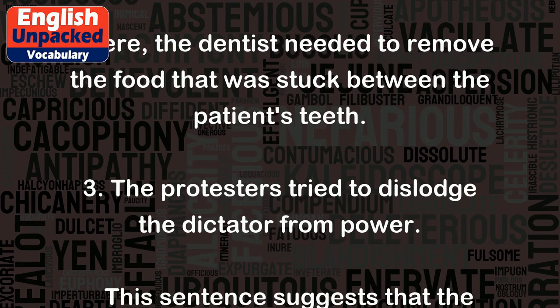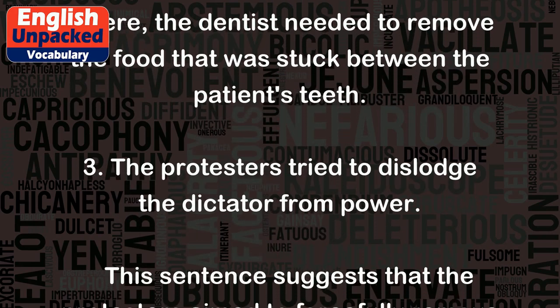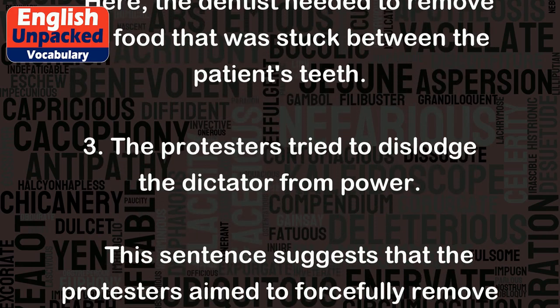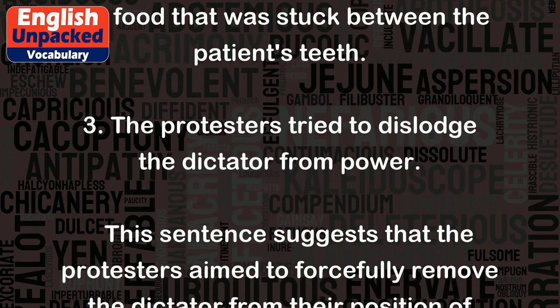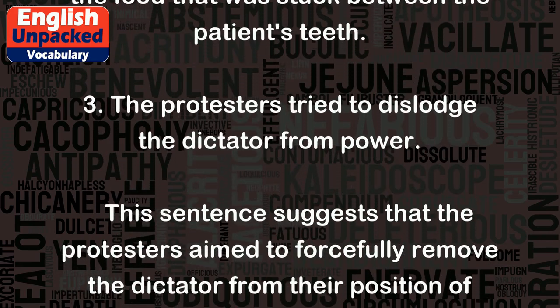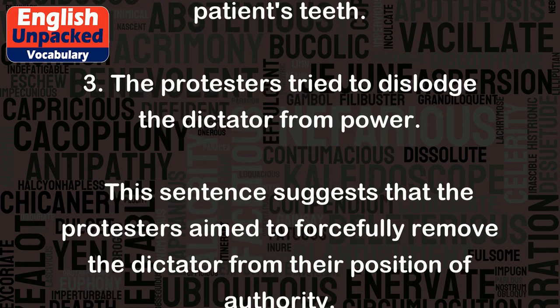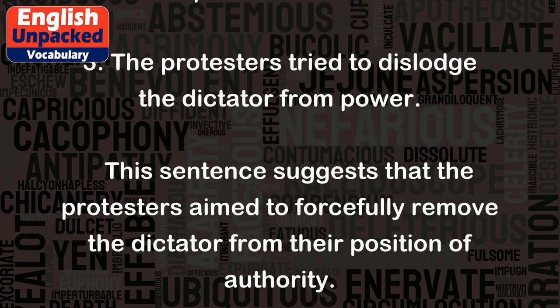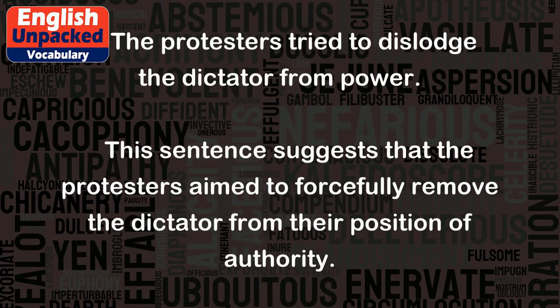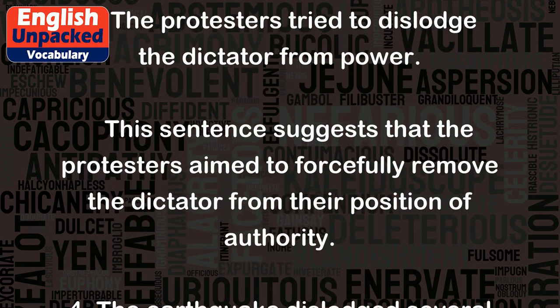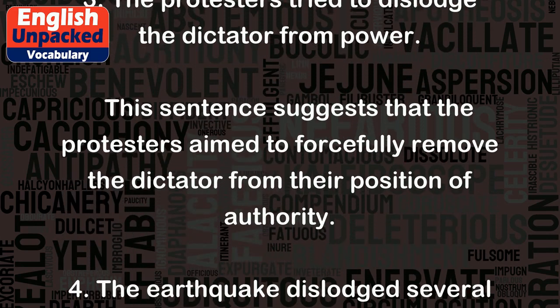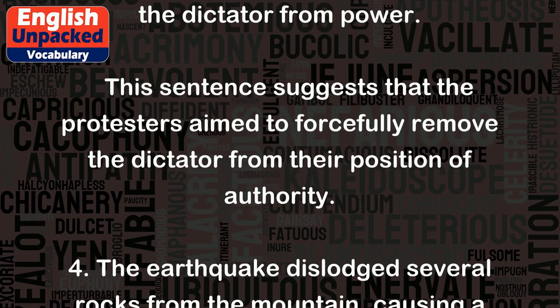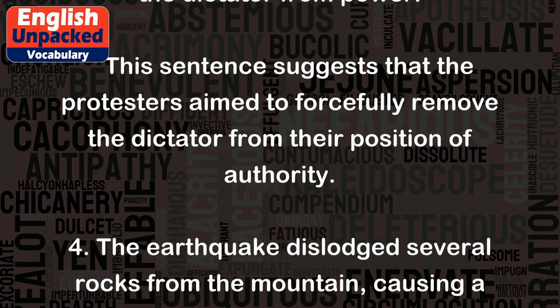3. The protesters tried to dislodge the dictator from power. This sentence suggests that the protesters aimed to forcefully remove the dictator from their position of authority.